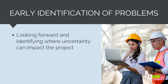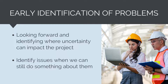The risk management process forces us to look ahead. By systematically identifying possible uncertain events or conditions that can impact project outcomes, we identify them when we are still able to fix them. Issues are identified before they become a problem. If we identify subcontractor resourcing as a risk prior to procurement, we can ensure that when selecting a subcontractor, we consider the required resources and ensure they have the resources to meet our schedule. By doing this, we are addressing the problem when we can still do something about it.